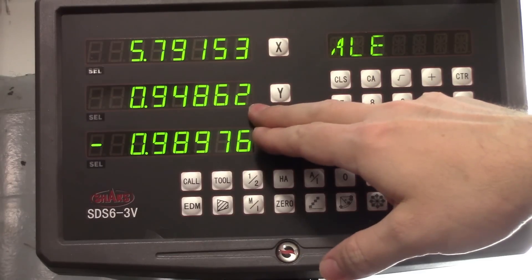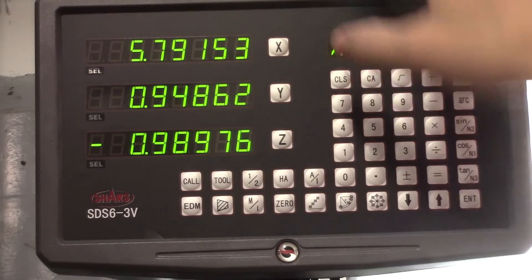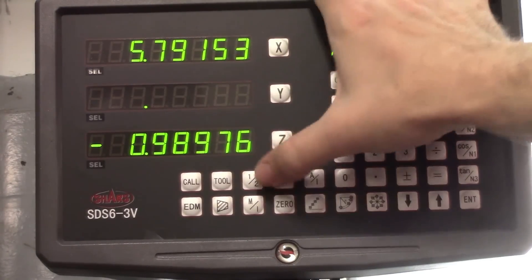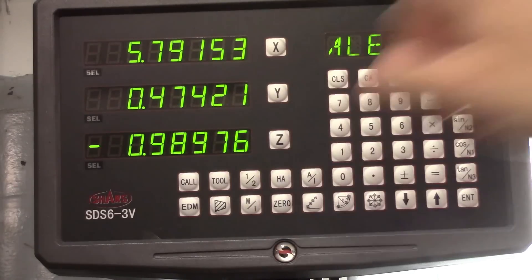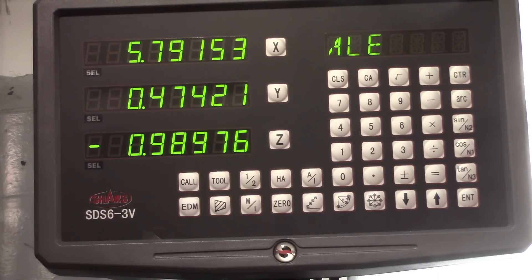This is where I found the edge on the second side of my part. So all I need to do is hit Y half and then move this into zero and I'll be right in the middle of my part.